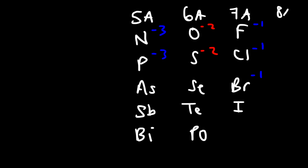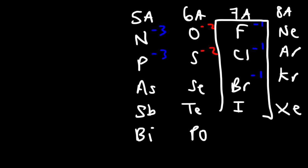In group 8A you have the noble gases: helium, neon, argon, krypton, xenon, and so forth. The noble gases are chemically inert — they're very stable and generally do not participate in chemical reactions. The halogens, on the other hand, are extremely reactive, and so are the alkali metals in group 1A.